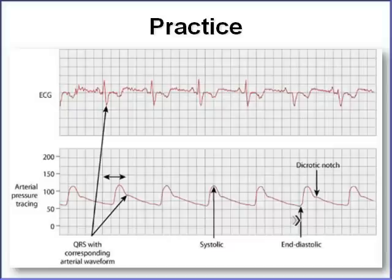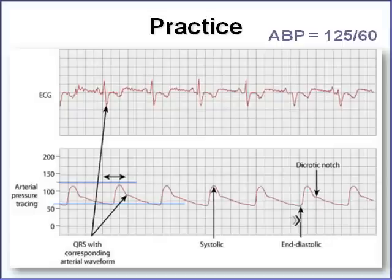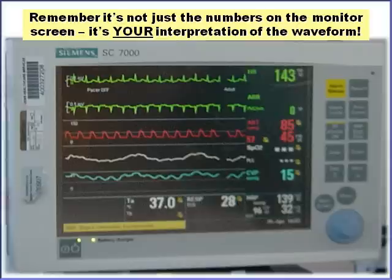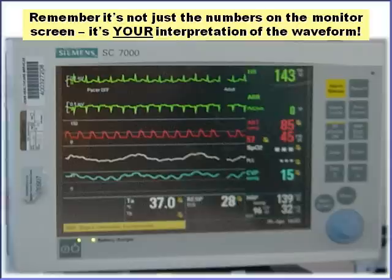For art line practice: find the top peak of systole and draw a line across to your scale — make sure it's a scale that makes sense for your patient's blood pressure. Then draw a line at the bottom of the diastolic area and you get your blood pressure. Remember, it's not just the number on your monitor screen; it's your interpretation of the waveform. Make sure you're doing it accurately. Good luck with your next waveform interpretation for CVP and art lines.